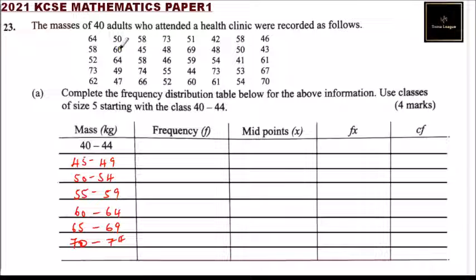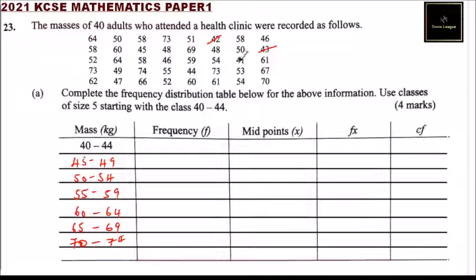We count the number of data values within each class. For the class 40 to 44, we count the values and find there are 4 data points in that class.